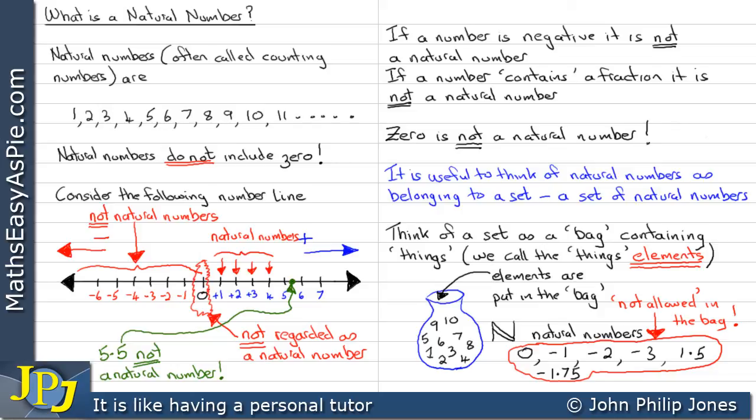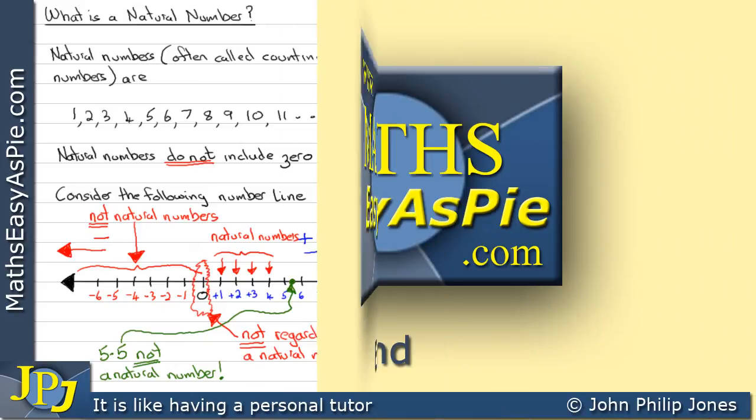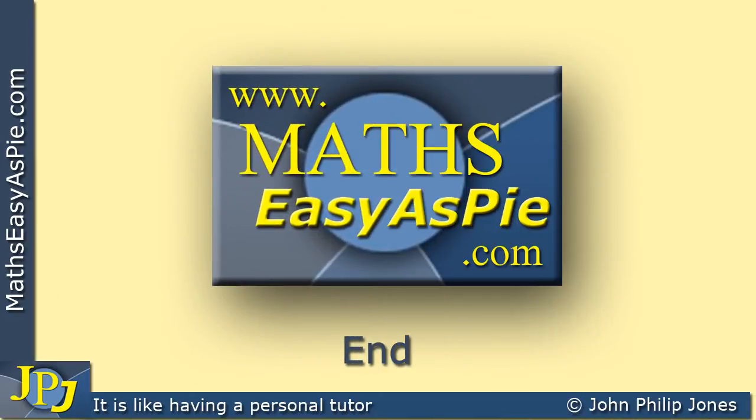Minus seven, no, it doesn't belong in the container. It's not a natural number. Seven and a half, no, it's not a natural number. Zero, no definitely. That's the one people often trip up on. Zero is not part of the natural number set.